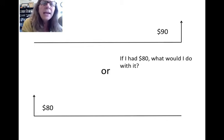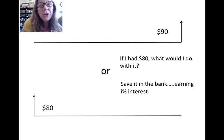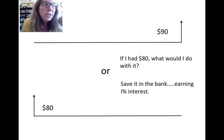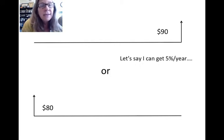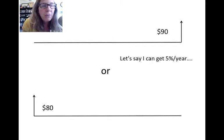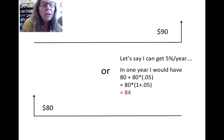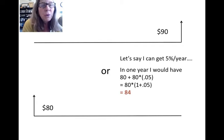The question we ask is: if I had $80 now, what would I do with it? In engineering economy, we assume we put it in the bank or invest it and earn interest — some I percent. Let's say we can get five percent a year. If we take the $80 and put it in the bank, in one year we'll have the $80 plus five percent interest on $80, which means we'd have $84 at the end of one year.